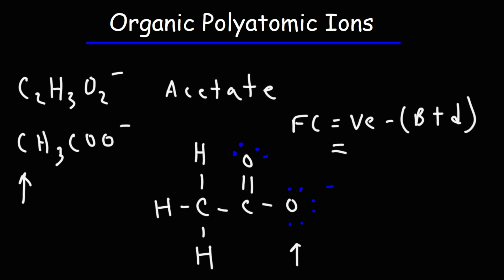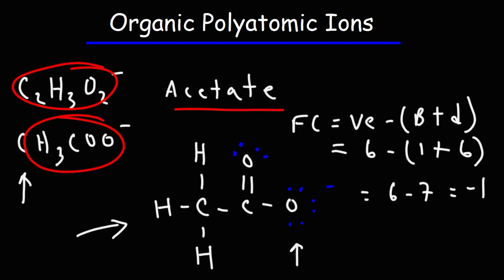In the case of this particular oxygen, it has six valence electrons. In this structure, it only has one bond, and we have three lone pairs, which is equal to six dots. So it becomes six minus seven, and we get a formal charge of minus one. This is the structure of acetate. Make sure you're aware of these two forms of acetate.